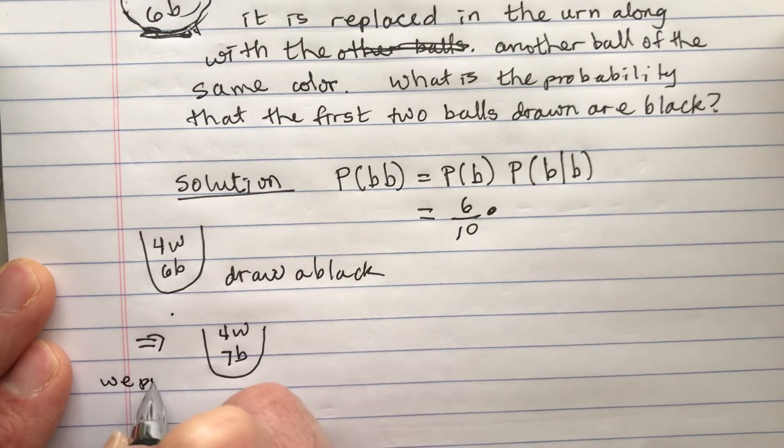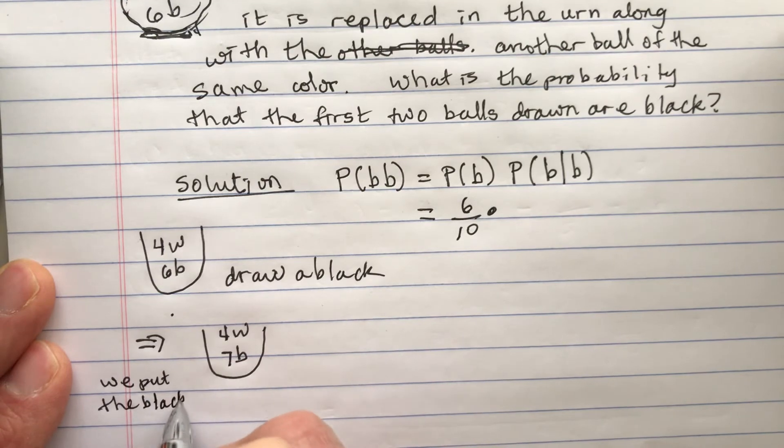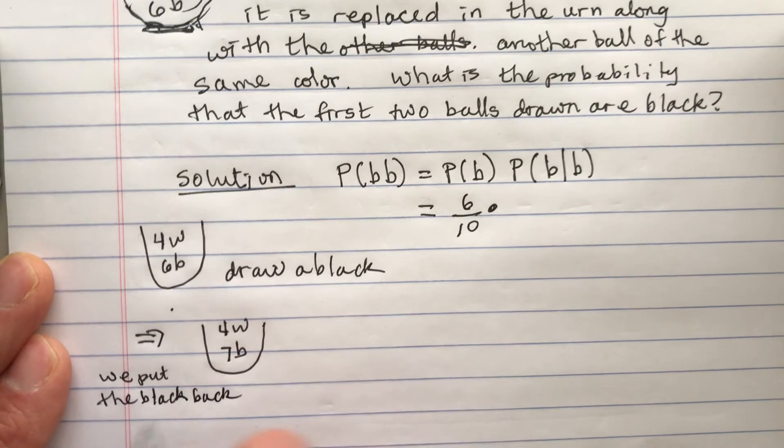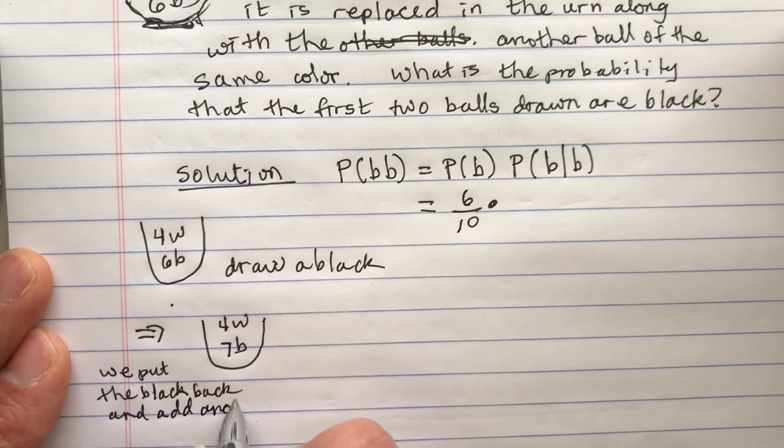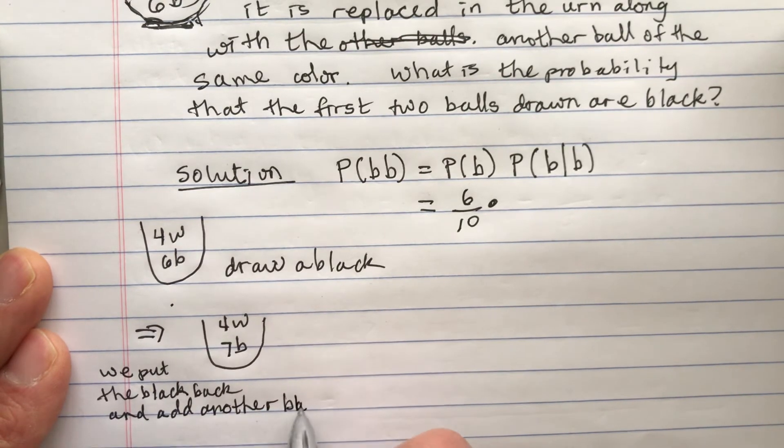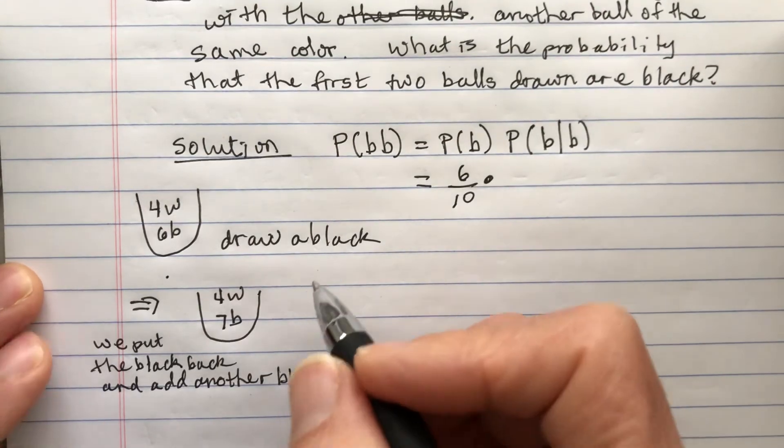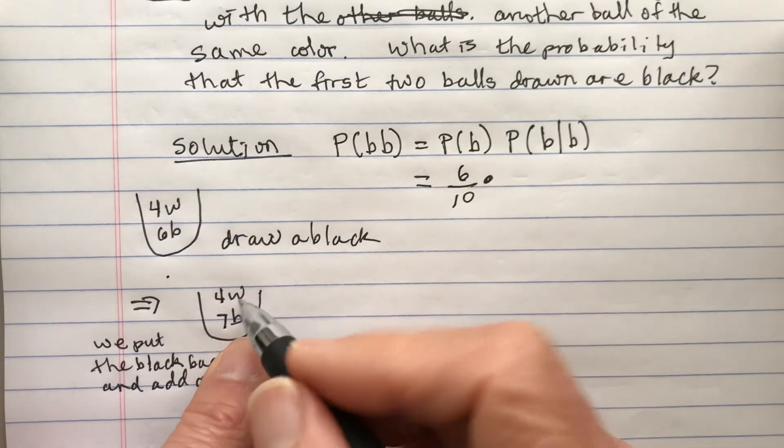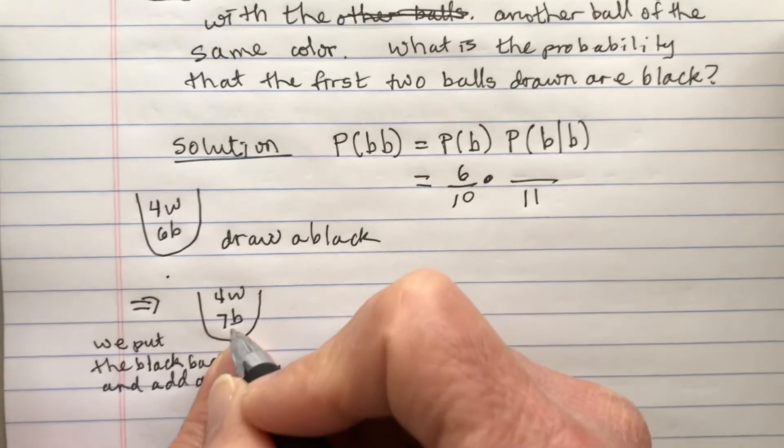We put the black back and add another black, and so the second time around there's eleven in total and there's seven blacks.